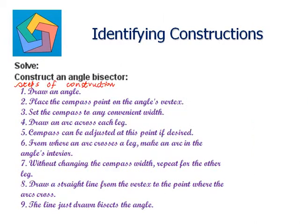Let's look at the next problem. Solve. Construct an angle bisector. Let's follow the steps of construction. First, draw an angle — let me draw any angle. Second, place the compass point on the angle's vertex. You need to open it to any convenient width and draw an arc across each leg. Place your compass point at the vertex and draw an arc which crosses both legs of the angle.